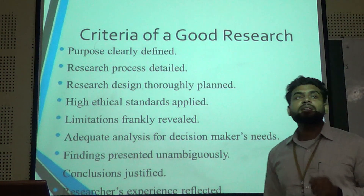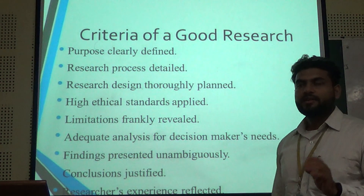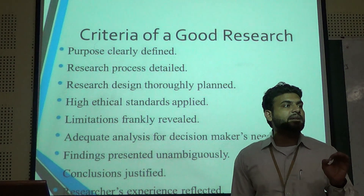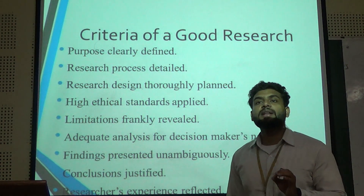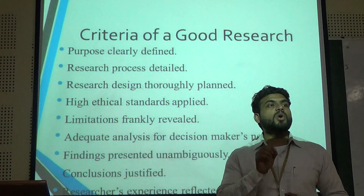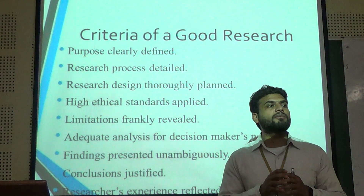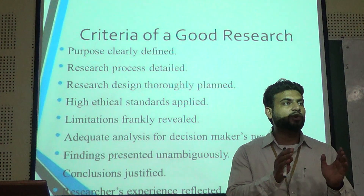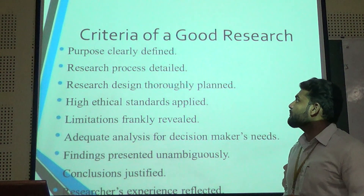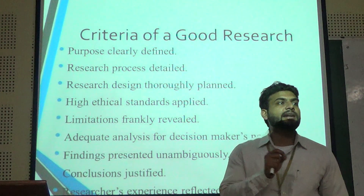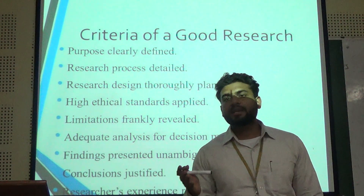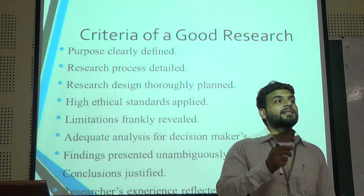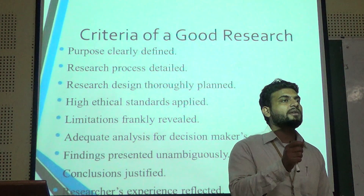Now, criteria of good research. What is the criteria of good research? First, purpose clearly defined — there must be a very clear representation of your research so that everybody can connect with it. Use easy, friendly language, not tough and lengthy language. That means if you publish your research, common people can read and understand it. Research process in detail means there must be a detailed explanation of your research — that is why research theses are 300 to 400 pages long, because each term is explained very clearly.